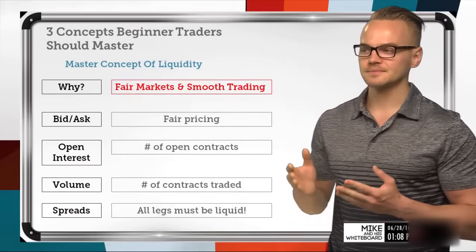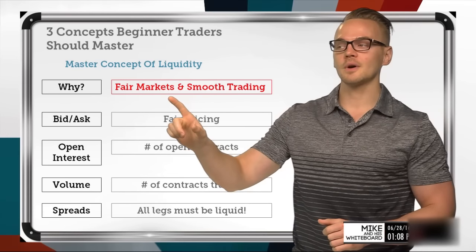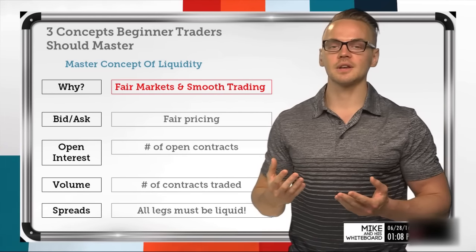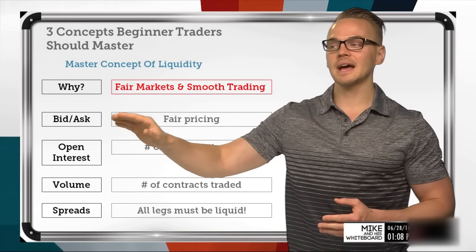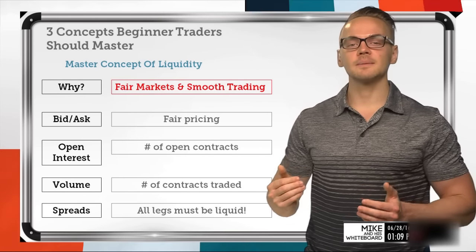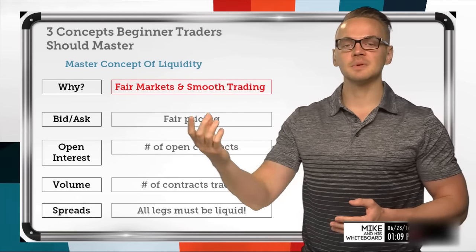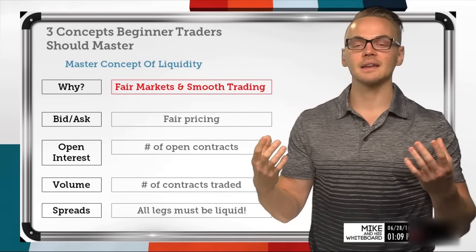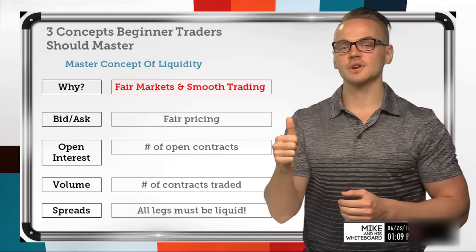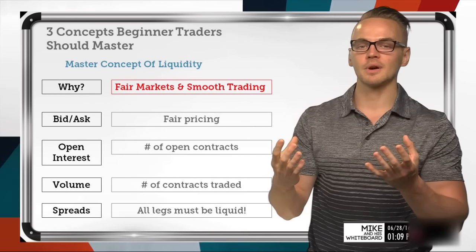Another thing that is really important to master is the concept of liquidity. Not only will it give us fair markets, but it's also going to give us a smoother trading environment. When we talk about liquidity, we're really looking at a few things: the bid-ask spread, open interest, and volume. When it comes to the bid-ask spread, the more participants there are in a market, the more fair that price is going to be — like 50 people trying to sell an item and 50 people trying to buy it.